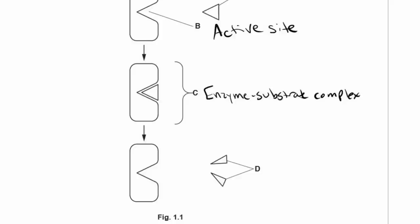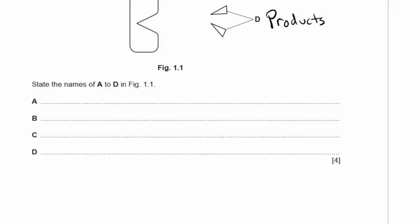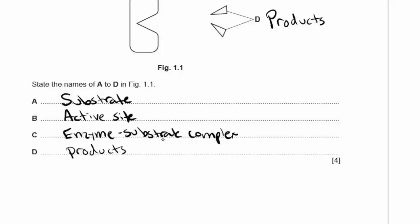Sometimes the substrate is one thing going into two; sometimes it's two things going into one. So: A was the substrate, B was the active site, C was the enzyme-substrate complex, and D were the products.